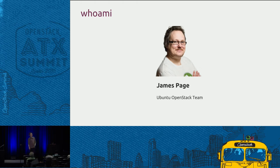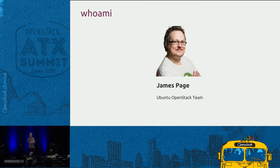The OpenStack engineering team at Canonical are responsible for the packaging you'll use on Ubuntu, the deployment tooling we have around that — which I will touch on today — and the testing and putting that all together as part of our release every six months.